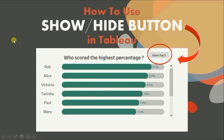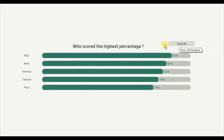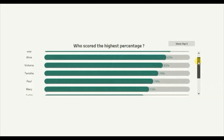Now let me show you the demo of what we will be doing today. Here I have a rounded progress bar chart that shows the percentage scored by the top 5 students of a class. There may be a scenario where you are also asked to show the percentage scored by all the students in the same dashboard. So instead of creating two separate views, I have added a button here.